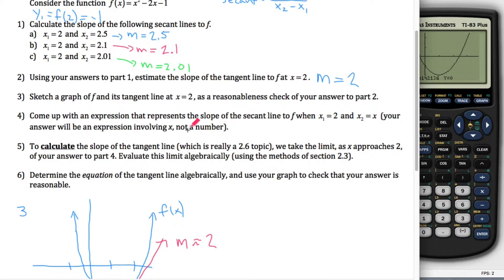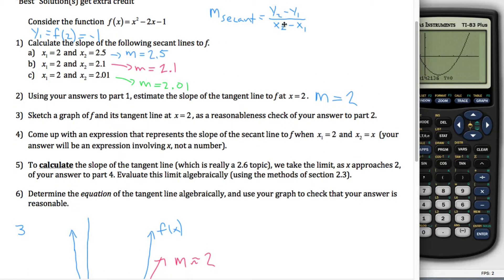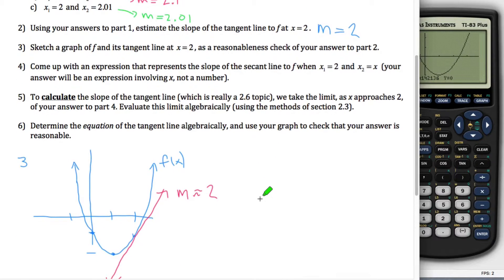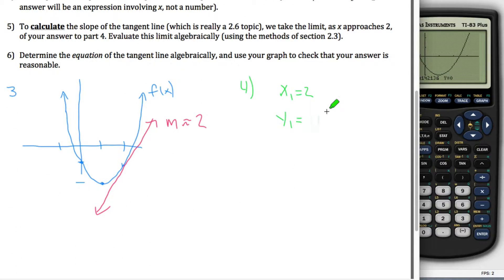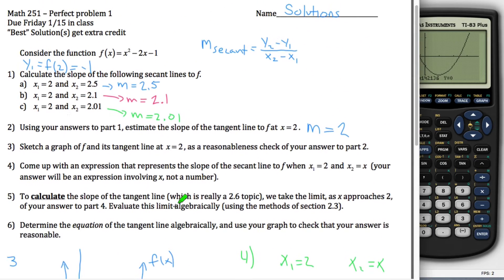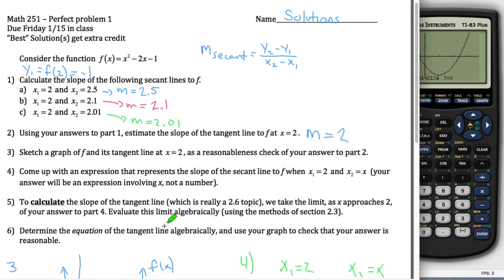Part 4 says, come up with an expression that represents the slope of the secant line when x1 equals 2 and x2 equals x. It's a little bit different. Really what you're doing is you're reusing this formula, just like we did up here. The only difference is x2 is not 2.5 or 2.1 or 2.01, it's x. So for part 4, I know that x1 equals 2 and I already figured out that y1 is equal to negative 1. x2 I'm told is equal to x, so how do I figure out y2? The same way I figured out y1. I take the x coordinate and plug it into the function. If you take x and plug it into this function, what comes out is x squared minus 2x minus 1.